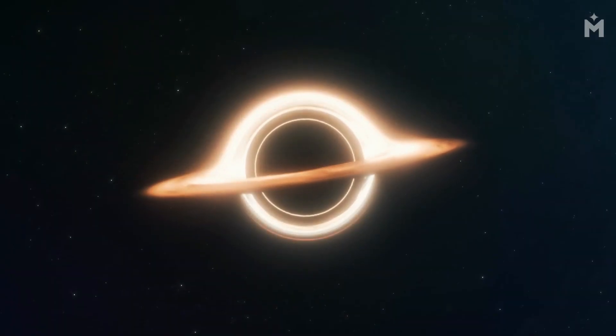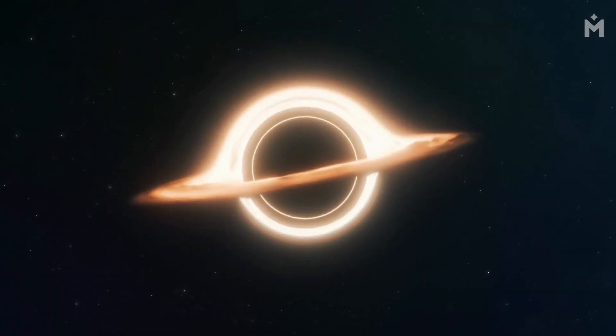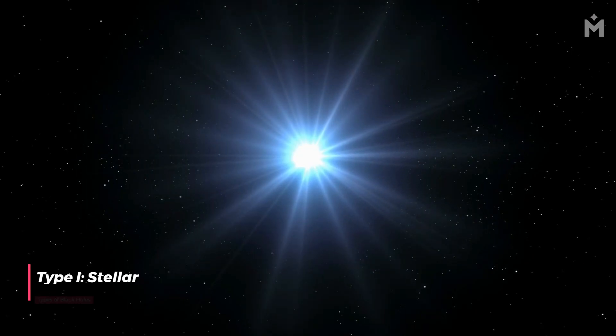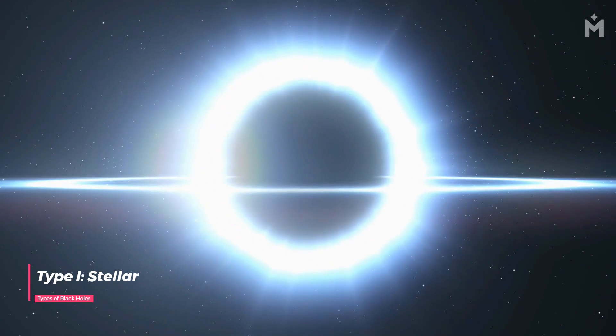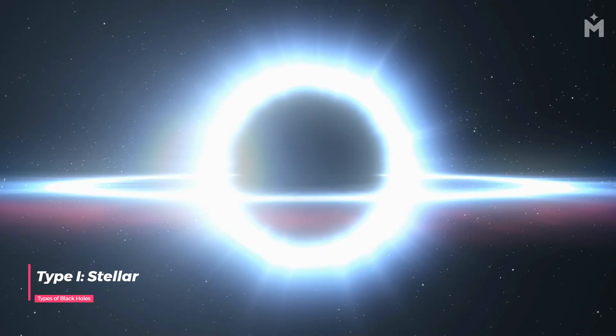There are two types of black holes, stellar and supermassive. Stellar black holes are the remains of a star that has collapsed in on itself. They are about the size of our sun and have a mass of about 10 times.